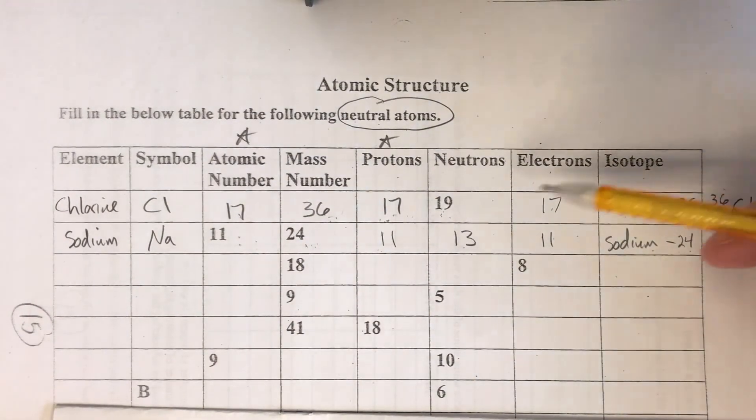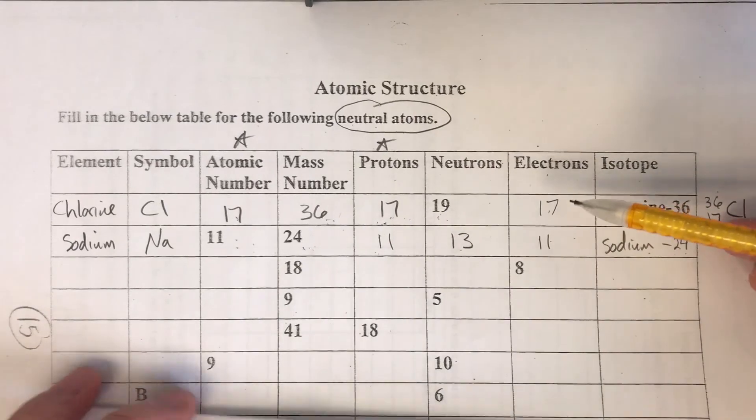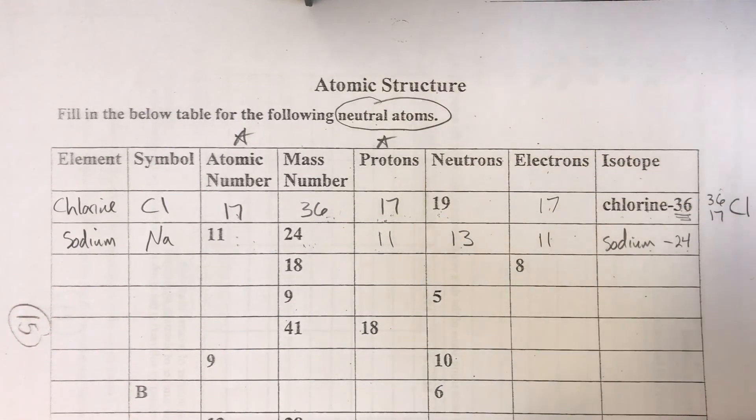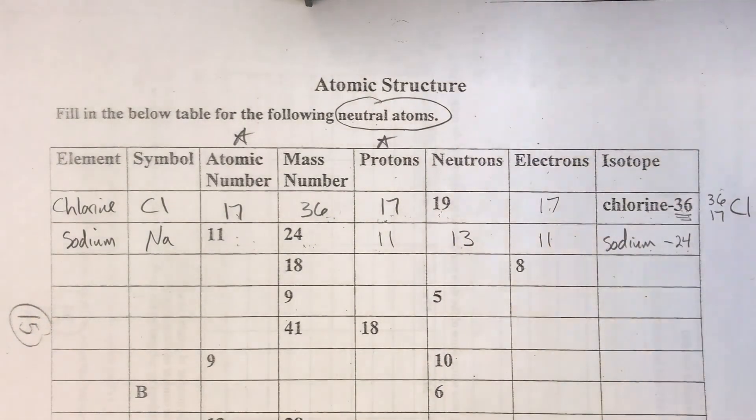So hopefully you figured out and you've determined what we're doing here. You can use that knowledge to finish the rest of the table. Look forward to seeing your success with calculating and figuring out protons, neutrons, electrons, mass number, and isotope.